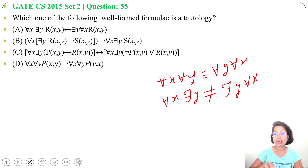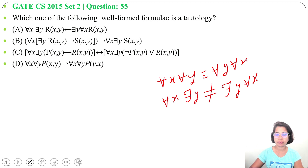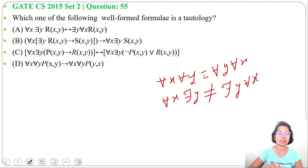If both are the same quantifier — like universal-universal or existential-existential — we can switch the position. If both are different, we cannot switch; the meaning will be different.